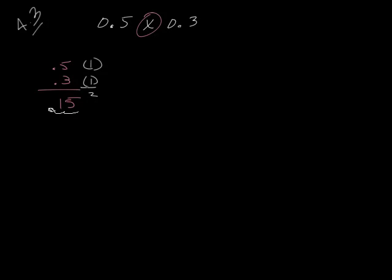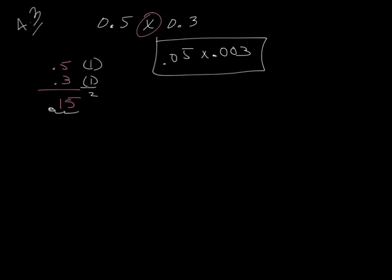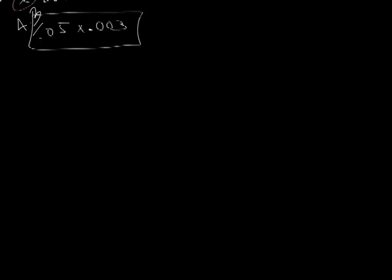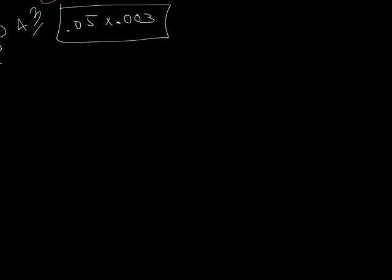So if we have 0.05 times 0.003, and this is example number two, this one right here. It would probably help out if I get rid of some of this. 0.05 times 0.003.